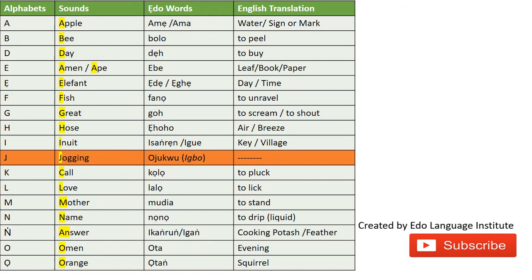Now we have another N sound — a nasal, like the 'NG' in 'answer.' A classic example is the word 'AKAUN' — many Nigerians know this word, sometimes pronounced slightly differently across ethnic groups, but in EDO we say 'AKAUN,' which refers to cooking potash. The nasal sound usually follows an A or U sound, and occasionally the O sound as well.